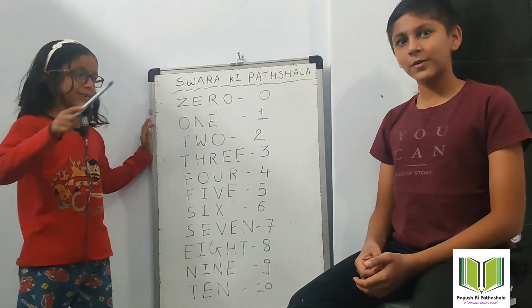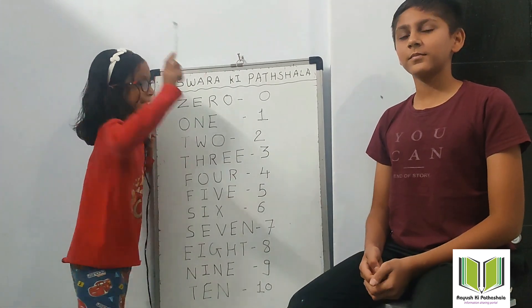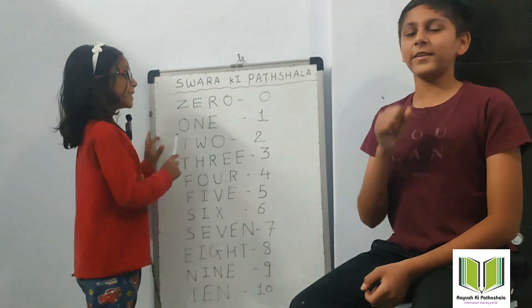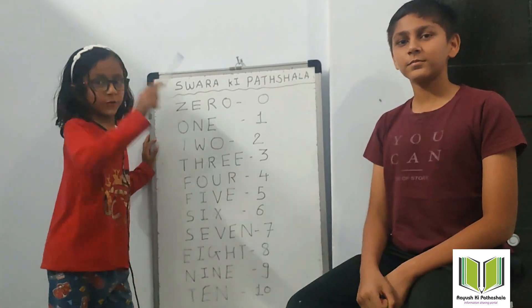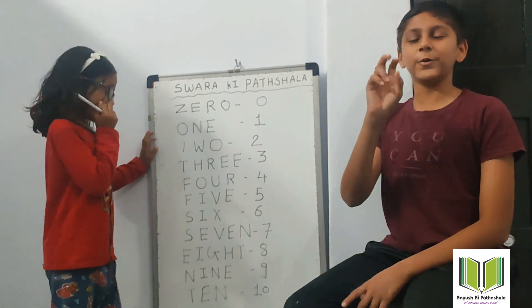Zero — Z, E, R, O — 0. One — O, N, E — 1. Two — D, W, O — 2.